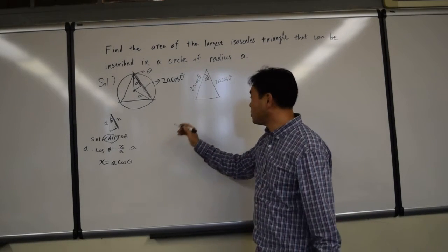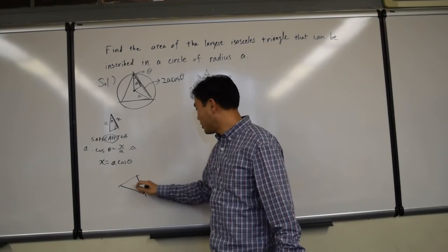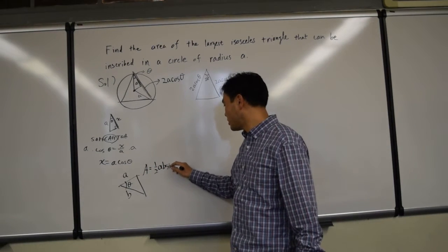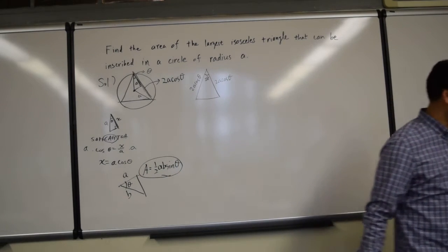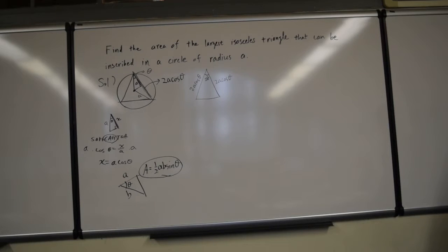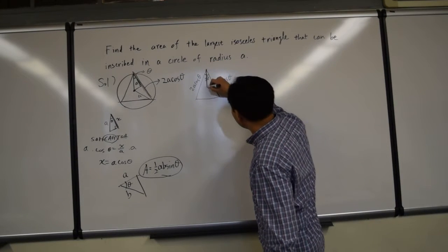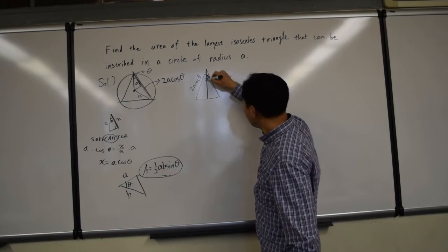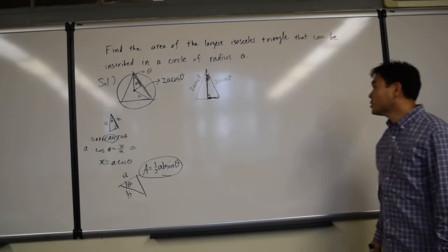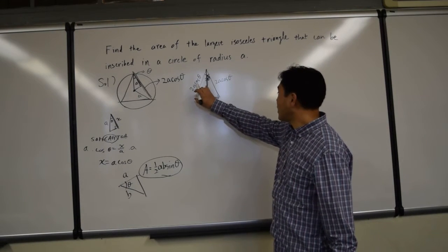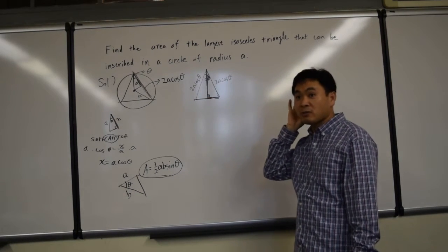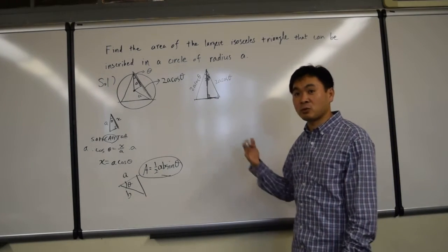One thing you can do is use the formula that a triangle's area is one-half A B sine theta. But most of you might not know this formula, so we'll do more geometry. Since this side is 2A cosine theta and we have a right triangle here, let's find the height and the base of this triangle — then we can find the entire area by doing one-half base times height.